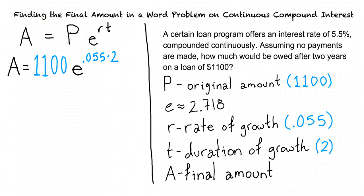Either way, you should end up with an answer close to A equals 1,227.9058775 and so on.